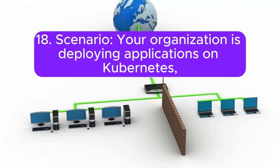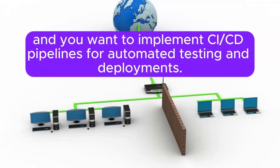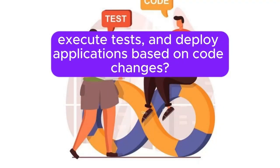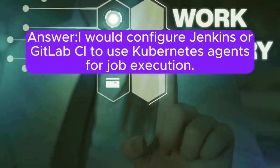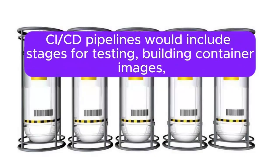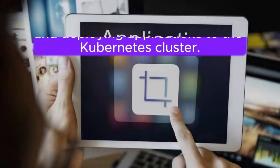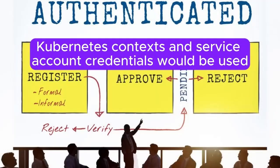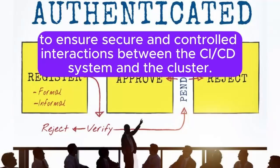Scenario 18: Your organization is deploying applications on Kubernetes, and you want to implement CI/CD pipelines for automated testing and deployments. How would you set up Jenkins or GitLab CI to interact with the Kubernetes cluster, execute tests, and deploy applications based on code changes? Answer: I will configure Jenkins or GitLab CI to use Kubernetes agents for job execution. CI/CD pipelines would include stages for testing, building container images, and deploying applications to the Kubernetes cluster. Kubernetes contexts and service account credentials would be used to ensure secure and controlled interactions between the CI/CD system and the cluster.